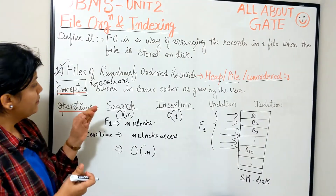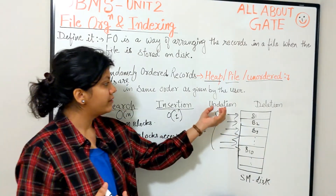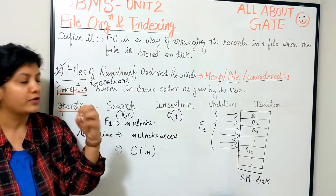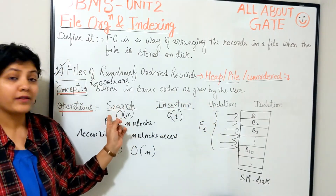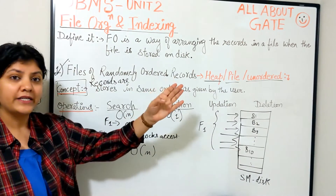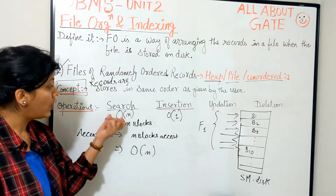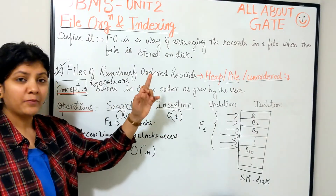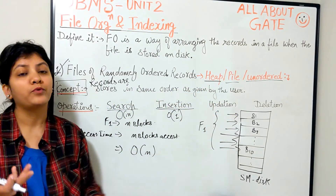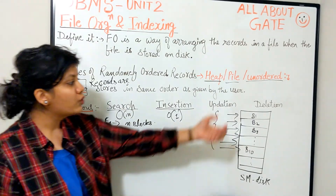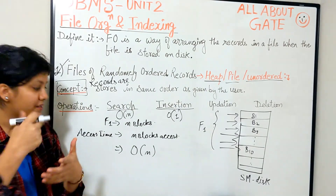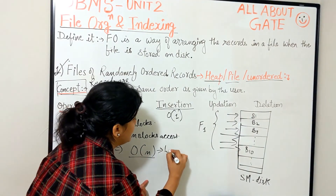Since searching itself takes O(N), you can easily tell that updation time and deletion time will also be O(N) in the worst case. Because for updating anything, first you have to locate it — search is involved. If you have to delete something, search is also involved. So for updation and deletion the worst case time is O(N). The best part about this type of organization is that insertion is easiest, but searching, updation, and deletion could take up to O(N) because we have no particular order and must perform a linear search.